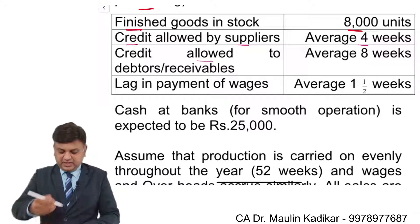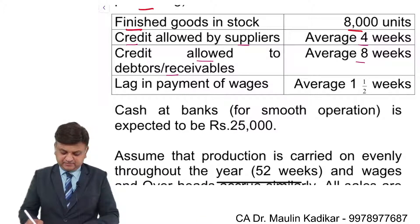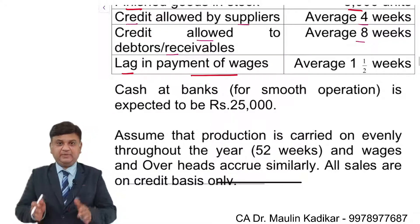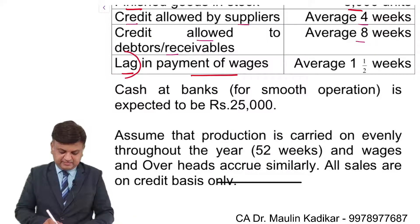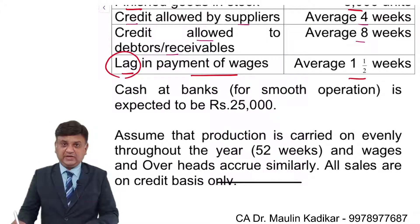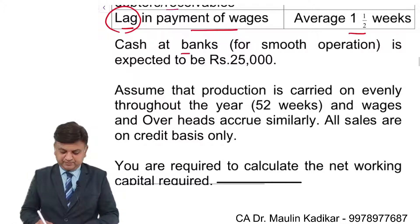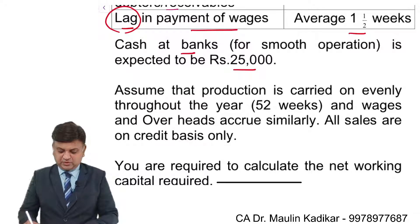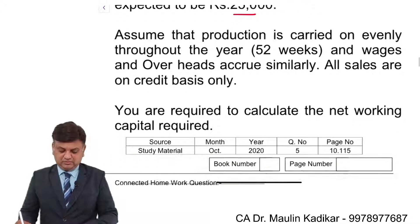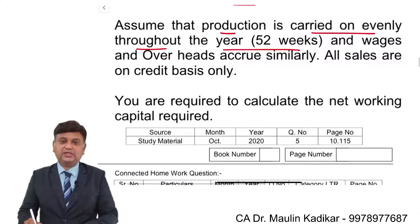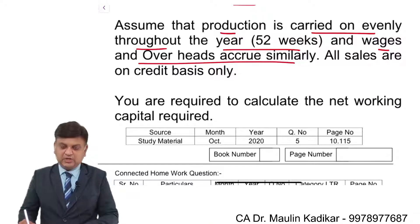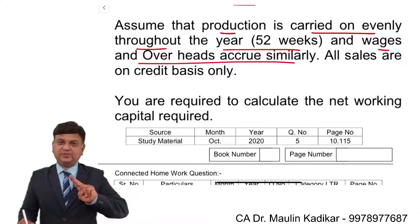Credit allowed by the supplier is on average four weeks. Credit allowed to the debtors is eight weeks. The lag in payment of wages — that is, the time gap — is one and a half weeks. Cash and bank balance required for smooth operation is ₹25,000.